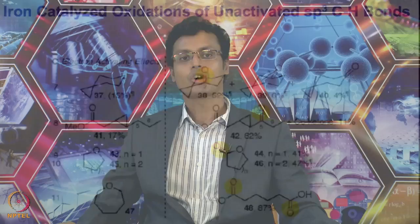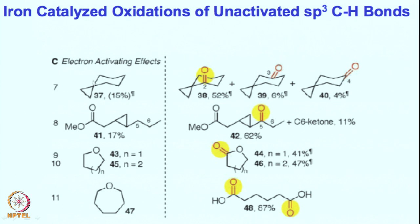Now, there are other controlling factors as well for which we are going to see the reactivity pattern and how they can influence the selectivity. For instance, if you have a cyclohexane ring with a cyclopropane attached to it, then this 3-membered ring is electron rich, and that electron richness can be imparted on the alpha position of the cyclohexane ring.